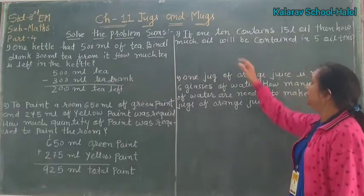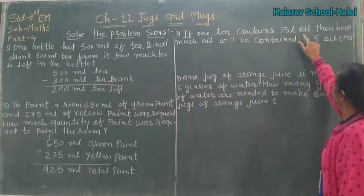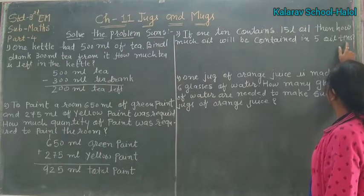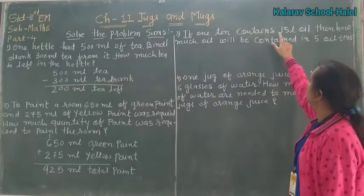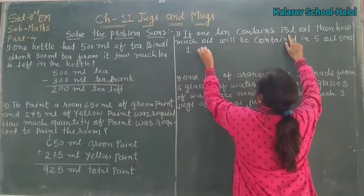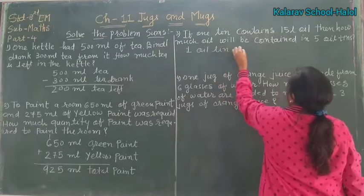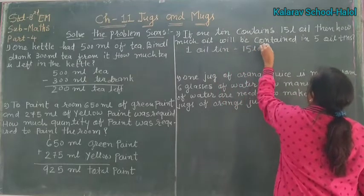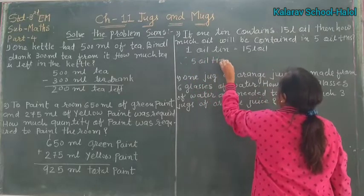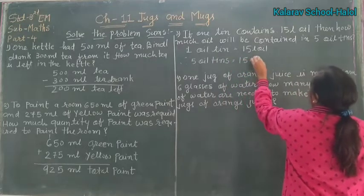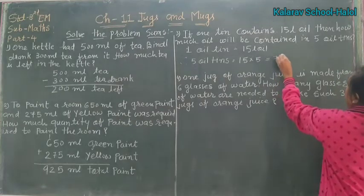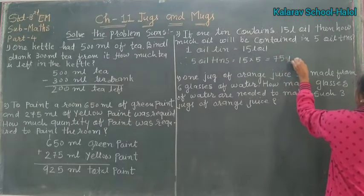Third problem: if one tin contains 15 litres of oil, then how much oil will be contained in five oil tins? One tin mein 15 litre hai. So, one oil tin is equal to 15 litres. 5 oil tins is equal to 15 multiply 5 — 75 litres of oil.